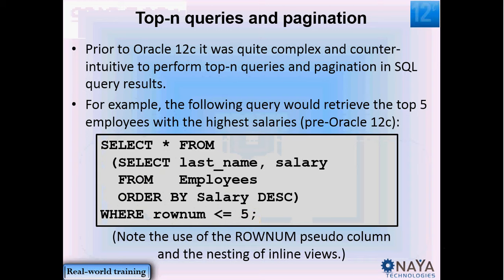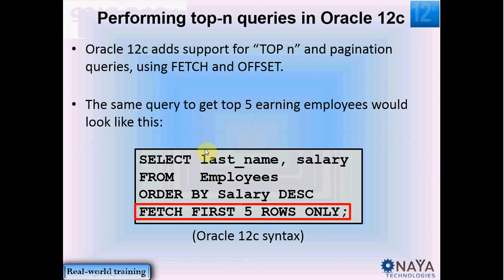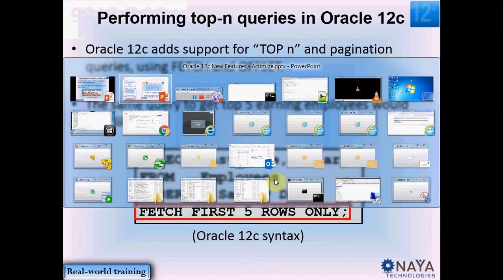As of Oracle 12c, all this is no longer required. Oracle has introduced the FETCH clause. You write your query in the normal fashion — SELECT, FROM, ORDER BY — and simply add the FETCH clause: FETCH FIRST FIVE ROWS ONLY, and you will get the first five earning employees. Let's take a look at a quick example of this.